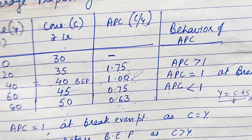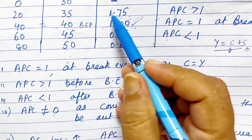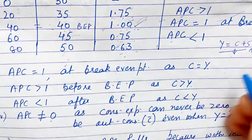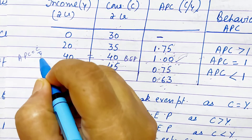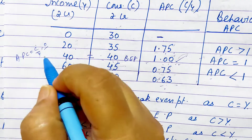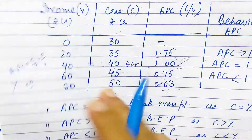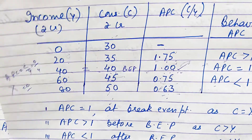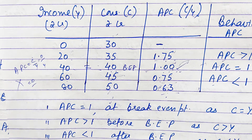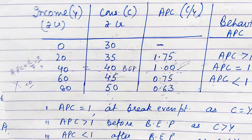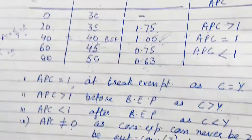One more point: the value of APC can never be zero. APC would be zero only if consumption C is zero — i.e., zero upon Y equals zero. But that cannot happen because consumption can never be zero. Even when income is zero, C is not zero, because there is a minimum consumption expenditure which is called autonomous consumption. This is about the behavior of APC.